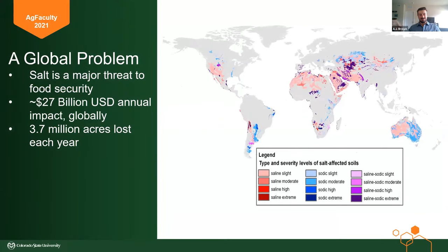So, who cares about salt? Salt is a global problem that I think a lot of people underestimate. The number one threat to food security in the world is erosion. As the Dust Bowl happened in the United States in the 1920s, we realized erosion was a major problem and started having big government efforts to mitigate that. But something that's not often as advertised is the number two food security threat, which is salinity. Salinity is really worldwide, and it's been an issue for centuries and millennia in some cases.